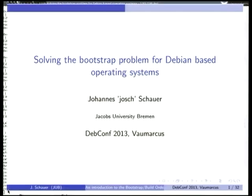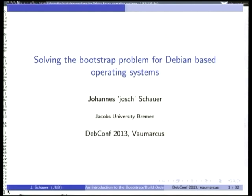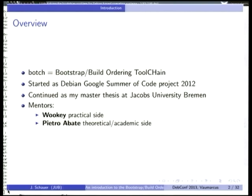Welcome to the talk on Botch, which is how I ended up naming the software able to bootstrap Debian-based operating systems from scratch just by doing a dependency analysis. Botch is short for Bootstrap or Build Ordering Toolchain. It started as a Debian Google Summer of Code project in 2012 and was continued as my master thesis at Jacobs University Bremen.